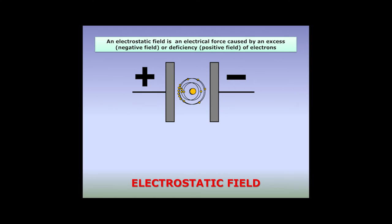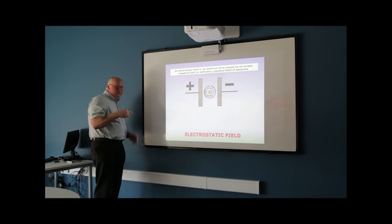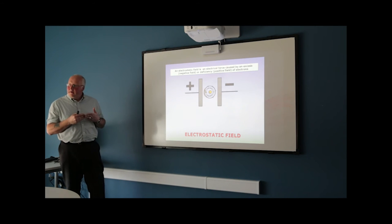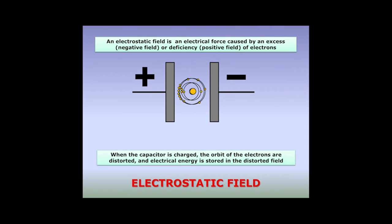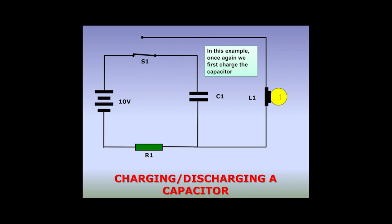All the electrons shift to one side of each atom. Because of the force of attraction from the positive plate, this maintains the charge state for a reasonable amount of time. When charged, the electron orbits are distorted toward the positively charged plate, and energy is therefore stored in that electrical field.